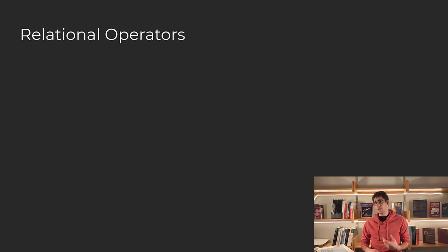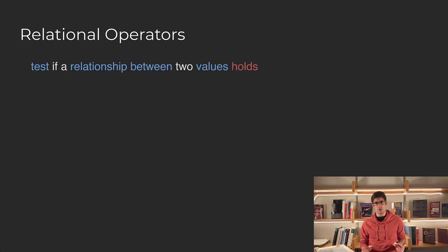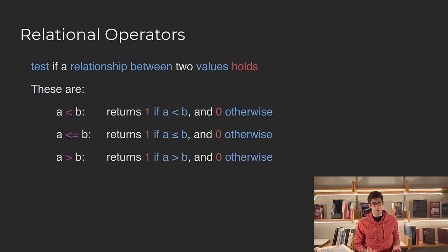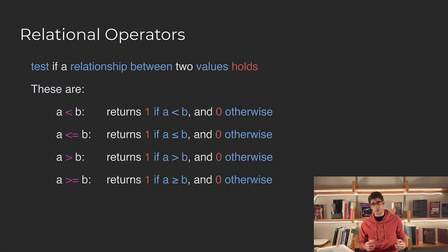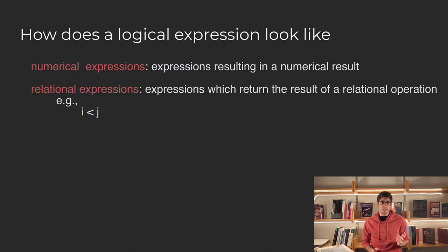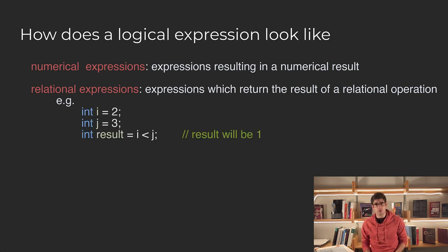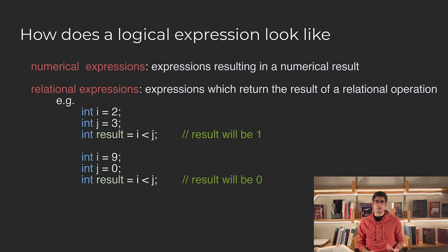We also have other operators, like relational operators, which test if a relationship between two values is true or false. These are operators like less than, less than or equal to, greater than, or greater than or equal to. So let's say i is less than j — that would be another logical expression that uses one of these operators. If the condition is true, we return 1, and if the condition is false, we return 0.